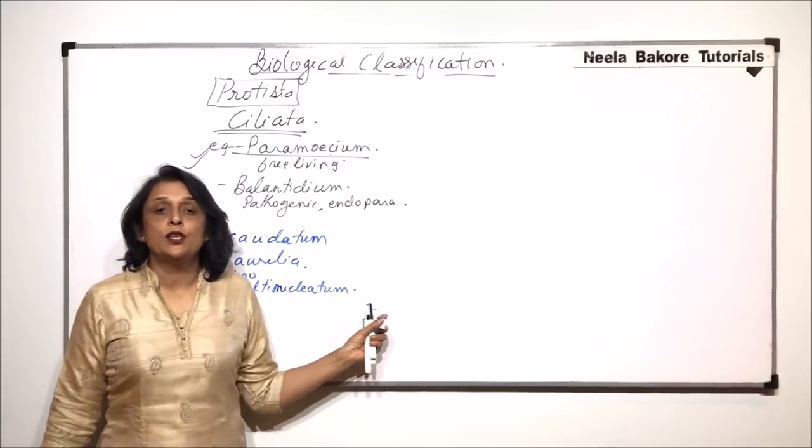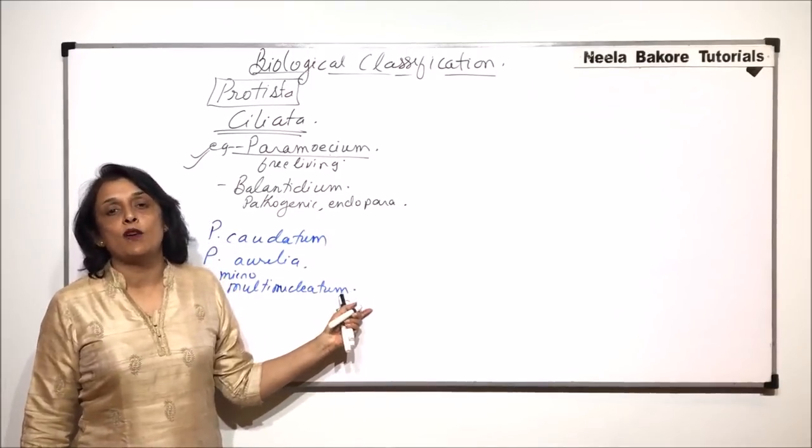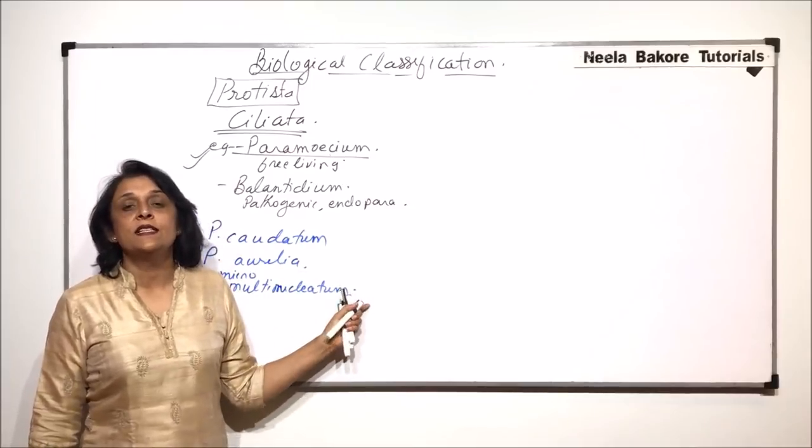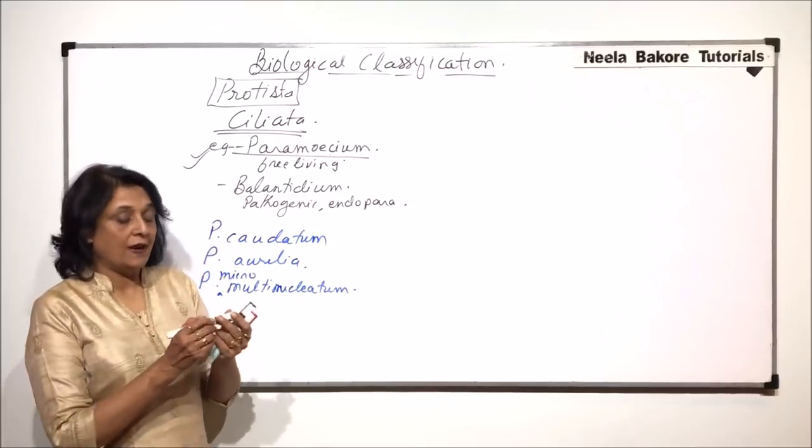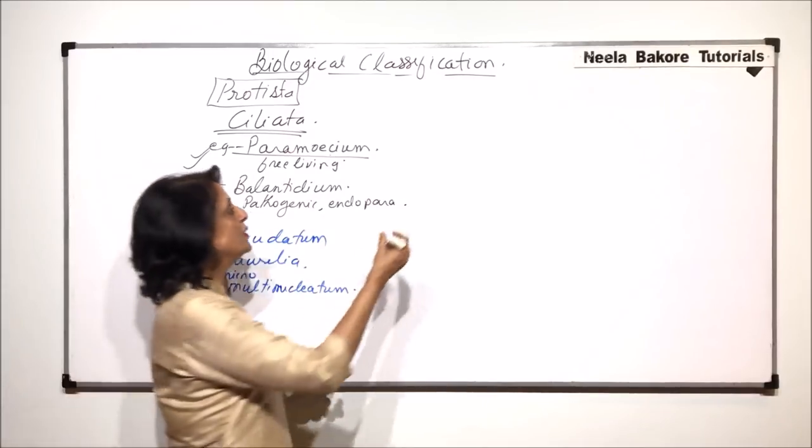In paramecium or in the ciliata group, we find nuclear dimorphism. There are two different nuclei present, that means it is a binucleate cell. Paramecium is commonly known as slipper animalcule.